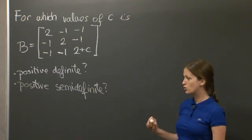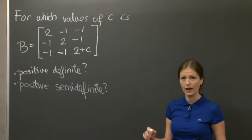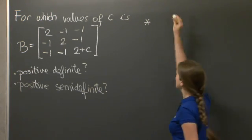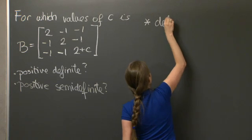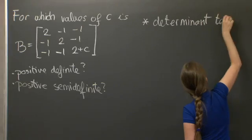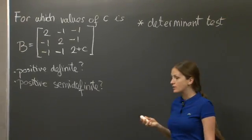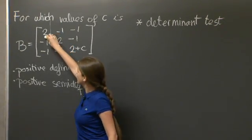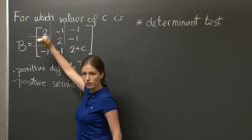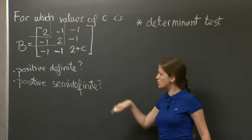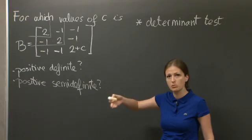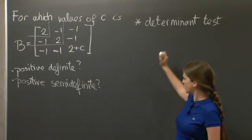First, I'm going to do the one that you should do in case you have very little time and you're asked to do a problem like this on the test, which is of course the determinant test. The determinant test asks us to compute determinants of the upper-left corner submatrices of all sizes. It says the matrix is positive definite if they're all greater than 0, and positive semi-definite if some zeros sneak into that sequence.